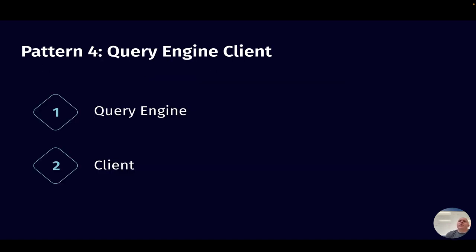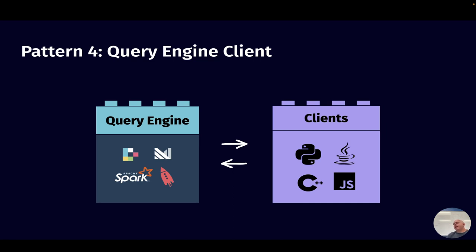Design pattern four is a client to the query engine. You have a query engine that's up and running, and then a client application that talks to it. The client application could be Python, C++, Java, JavaScript, or Go — all that matters is that the query engine supports the client for the language you care about. The client can subscribe to outputs from the query engine, get the data, and do things with it. A client could also potentially perform calculations and send results back into the query engine. These clients could be other real-time systems or user interfaces — it is quite flexible.